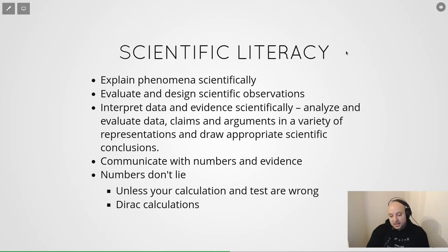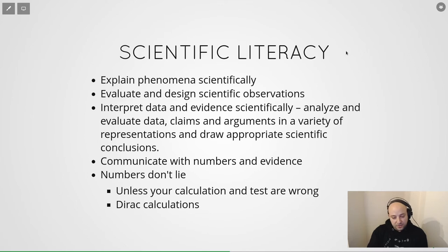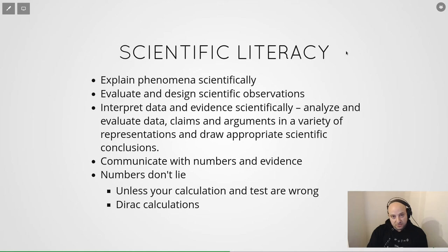Since that particle wasn't known at the time, Dirac didn't believe the numbers. He solved the problem over and over using different methods — a painful three years. He kept getting the same results, so he published a paper claiming a particle like the electron but with a different charge existed, which he named the positron. A few years later antimatter was discovered. If we do everything right, numbers never lie.